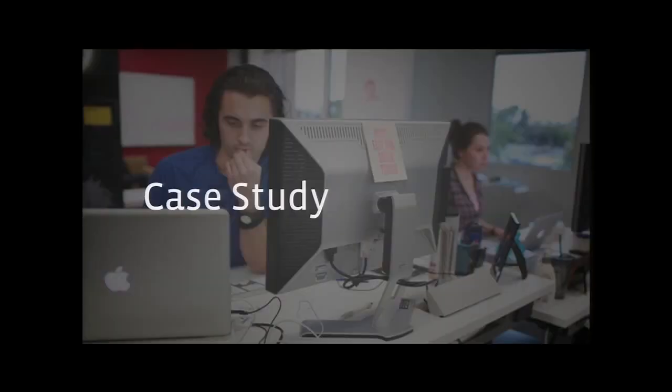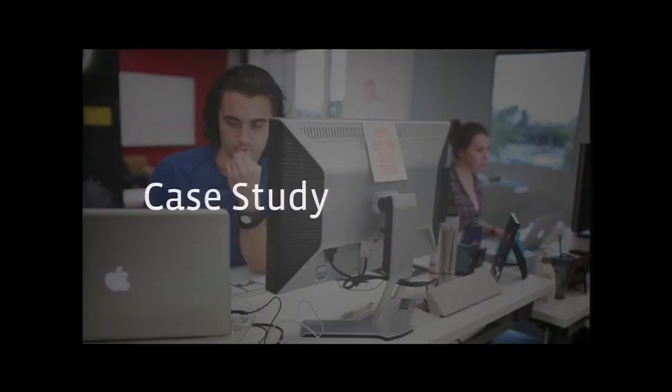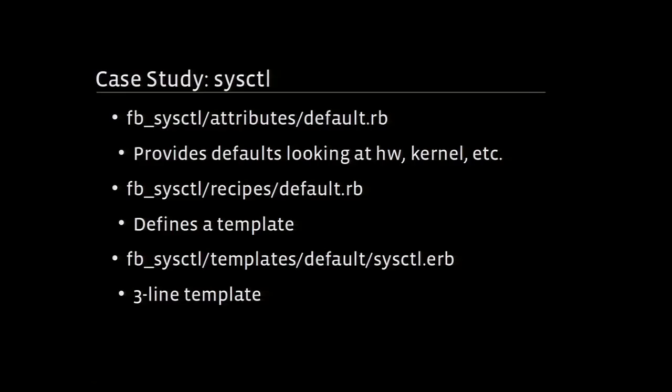So how do we get there? We do this with a lot of different cases. I'm going to take one example and walk you through how we do this. I talk about sysctls a lot — we're going to look at sysctl again for this case study. Before we rolled out Chef, we had CFEngine 2, and in CFEngine 2 we had 157 copies of sysctl.conf for every possible combination.